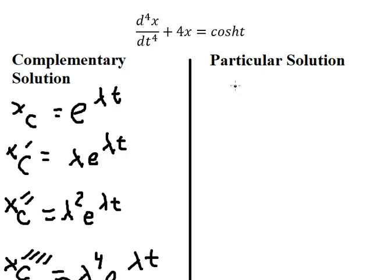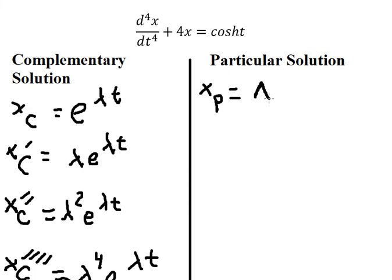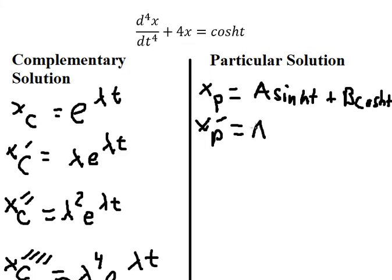Next we find the particular solution. Since we have cosine t on the right-hand side, we put sb equal to A sin t plus B cos t. Taking the first derivative of sb gives us the first derivative form, and repeating the process up to the fourth derivative gives us the higher-order terms.